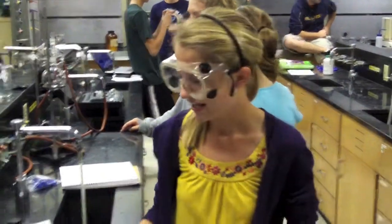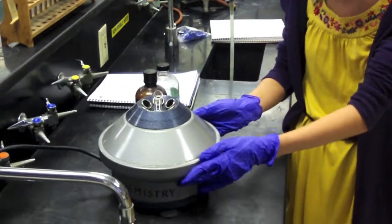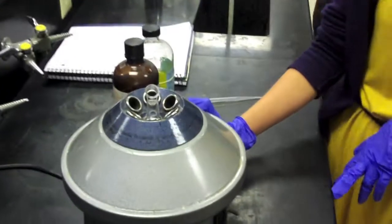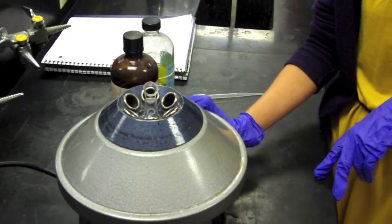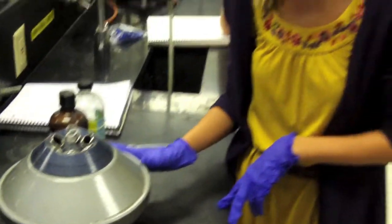Centrifuge is the process of separating substances by densities. Today we're using a centrifuge, which is an apparatus that rotates at high speeds to separate substances by densities in a homogeneous mixture.